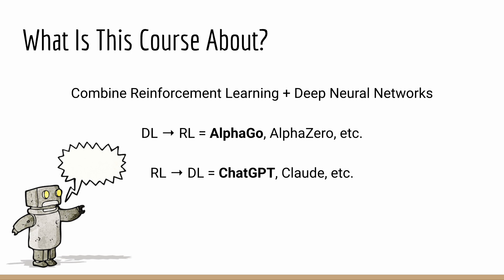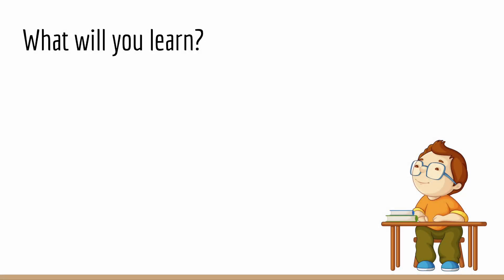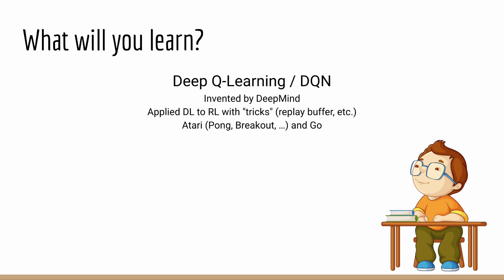In short, if you consider yourself a modern machine learning engineer, you need to know both deep learning and reinforcement learning, and how to combine them. So what will you learn in this course, and what will you get out of it? This course will teach you two fundamental approaches for how to combine deep learning with reinforcement learning. The first is Deep Q-Learning, or DQN, which stands for Deep Q-Networks.